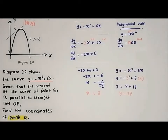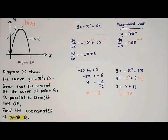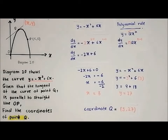Next, to get the y-coordinate, we substitute x equals 3 into the equation of the curve, and our answer for y is 27. Therefore, the coordinates of Q are (3, 27).